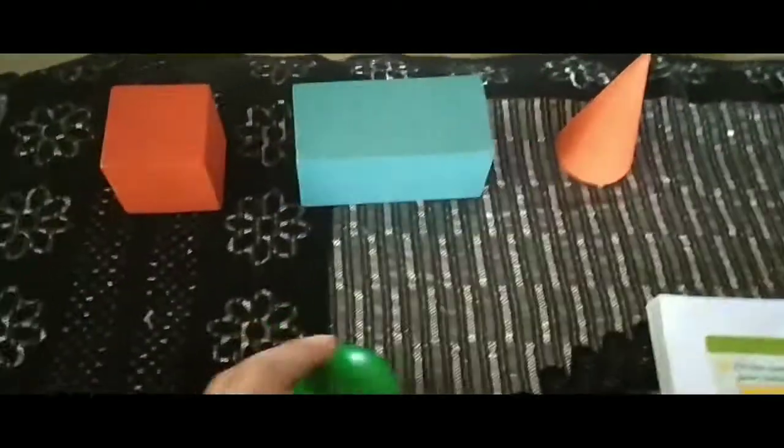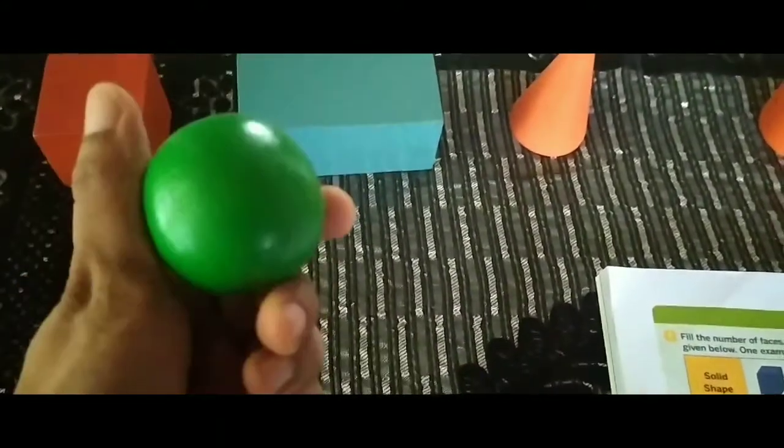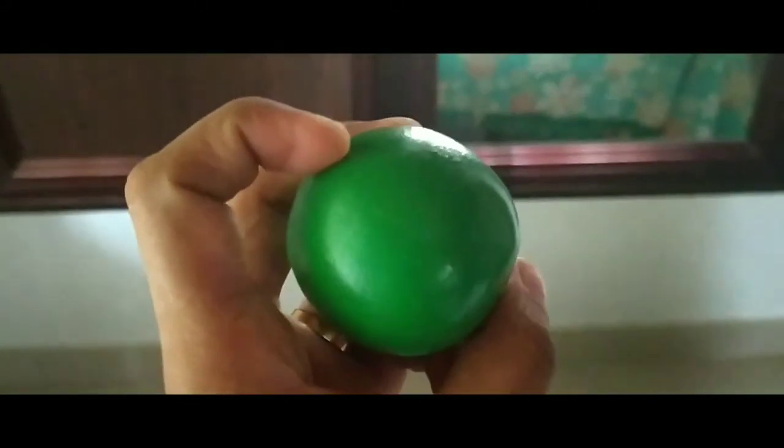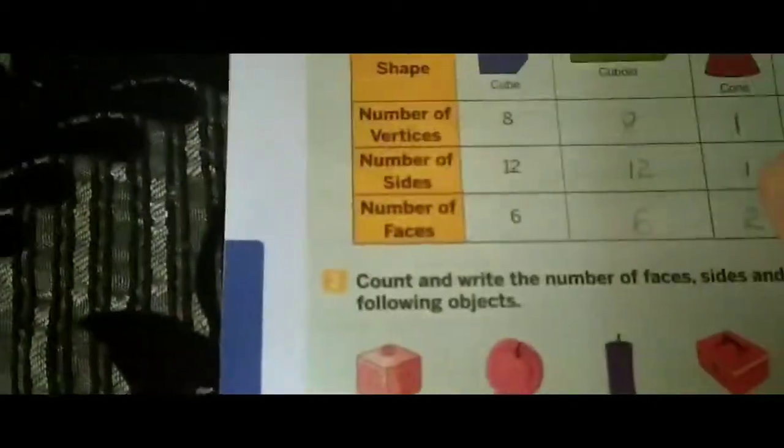A sphere has only one curved face. Children, can you see any edges or sides here? No — a sphere has no edges or sides, so we will write 0. Any vertices here? No — a sphere has no vertices, so we will write 0.